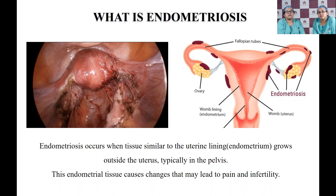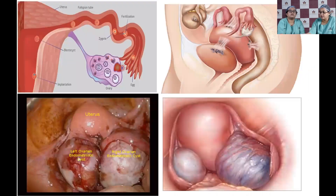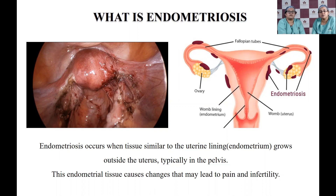The most common sites where we encounter endometriotic tissue are: in the ovary, where it can result in a chocolate-colored cyst called an endometrioma; and in the substance of the uterus, a condition called adenomyosis. It can also be present in other parts of the pelvis, the peritoneum, or on the intestines. In rare cases, such tissue has even been found in the lungs or liver.